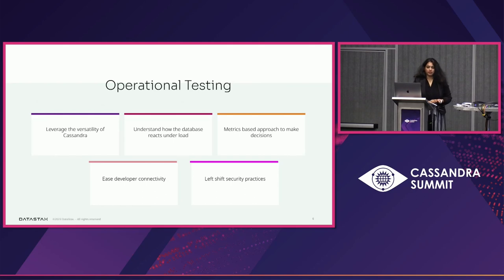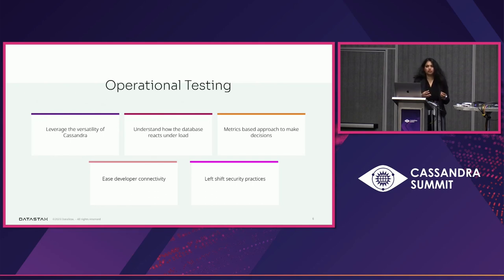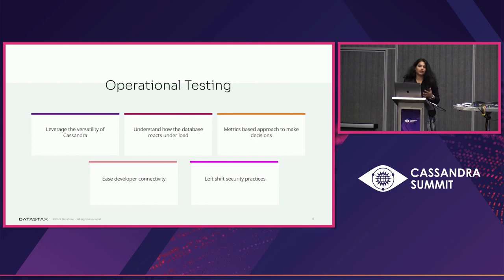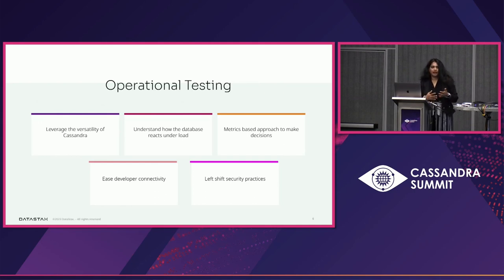Hence operational testing. What it means to do operational testing is to leverage the versatility of Cassandra, understand how Cassandra as a database reacts under load relevant to that organization and that application, and have metrics-based decisions to enable and accelerate the choices that we make. And finally, ease of developer connectivity — the goal as operator is to avoid developers getting into a guessing game on what a particular config should be, or how they should approach Cassandra as a database. So how do we simplify that so that adoption of Cassandra becomes very simple for app developers?